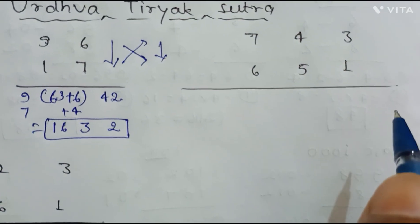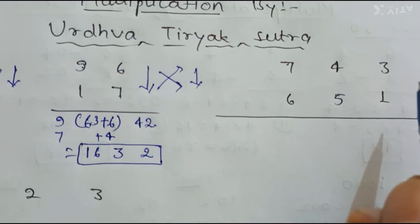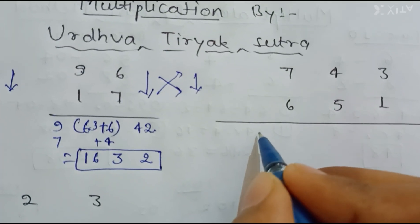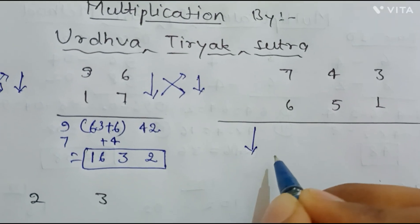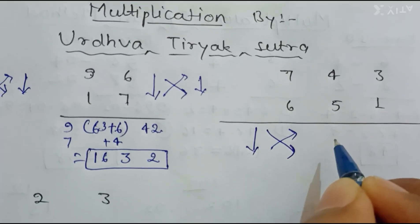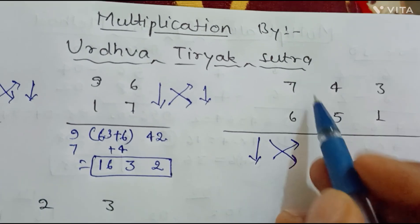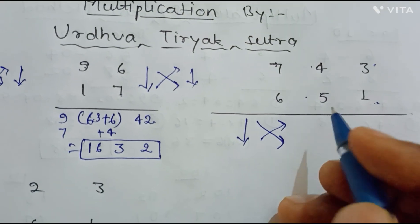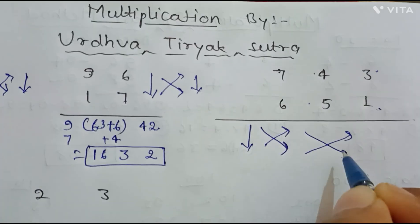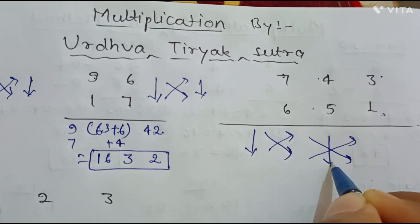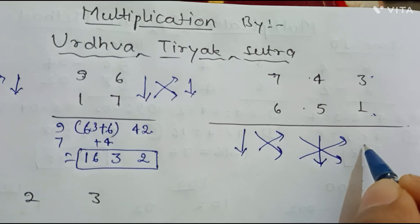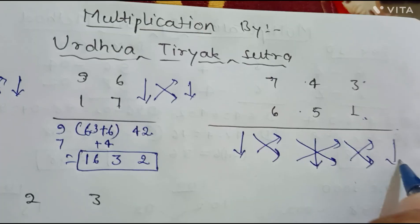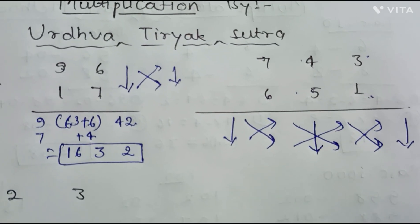Now let us understand the same method for 3-digit numbers in a simplified version. The first step is to vertically multiply. The second step is to cross multiply. The third step is to do multiplication for the outer corners and then add the vertical multiplication. Then we do crisscross for the next two digits, and the final step is again to vertically multiply the last digits.